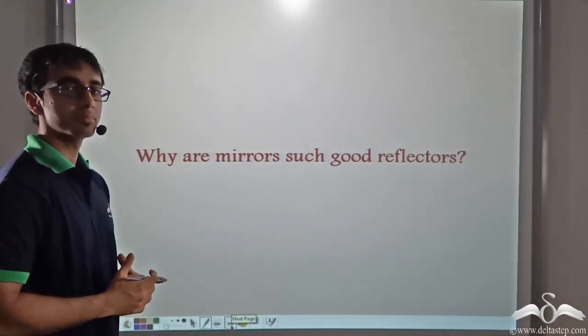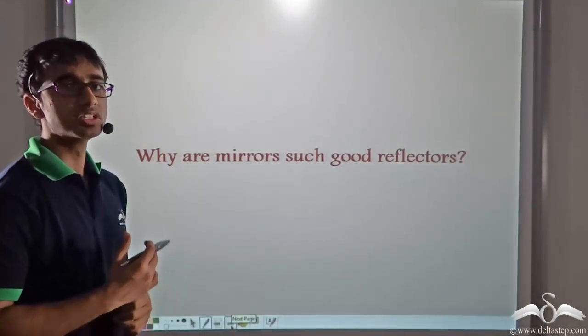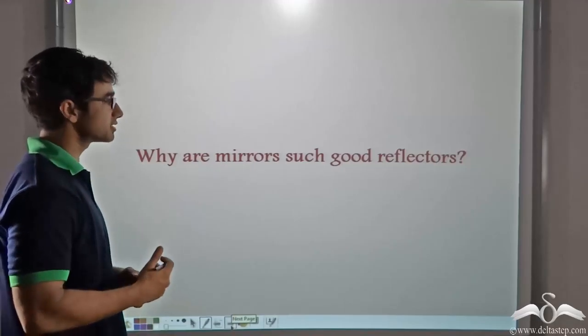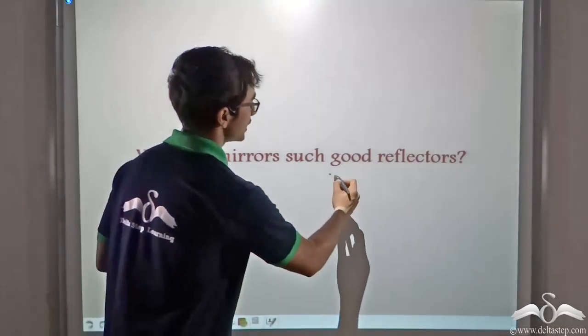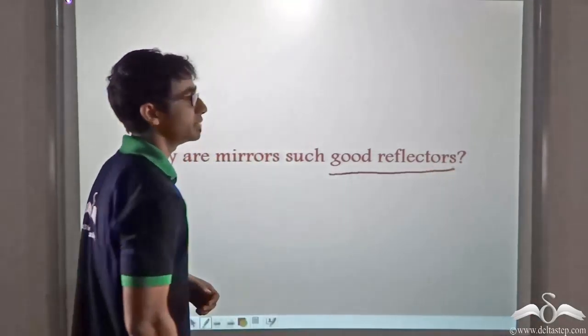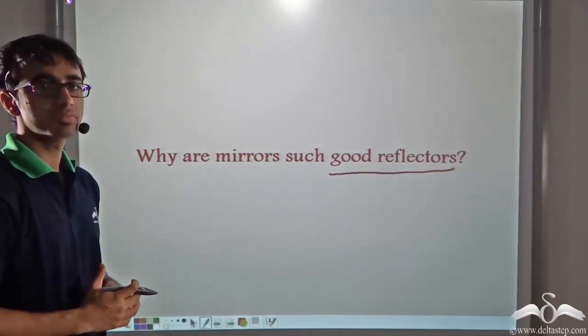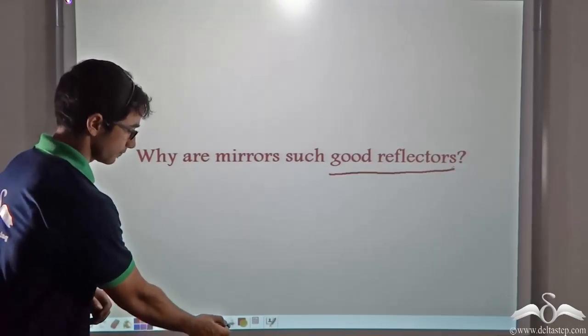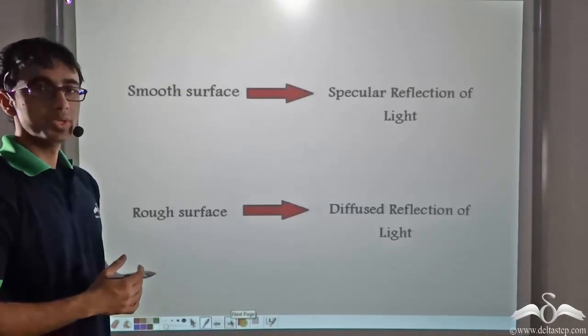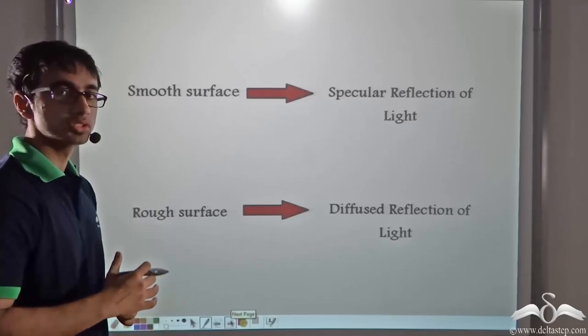So what do you think make mirrors such good reflectors? Why are mirrors always used and what are the reasons behind them being good reflectors? Let us find out what should be the properties. We learnt that when a surface is smooth, light falling on it undergoes specular reflection.